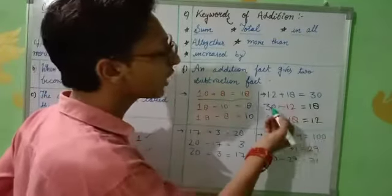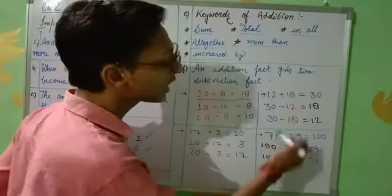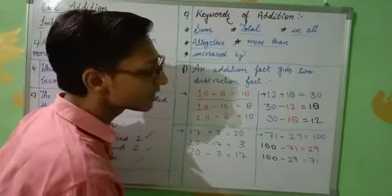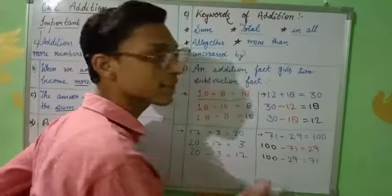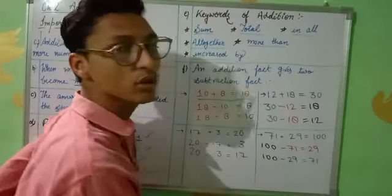12 plus 18 equals 30. 30 minus 12 equals 18, and 30 minus 18 equals 12. 71 plus 29 equals 100. 100 minus 71 equals 29, and 100 minus 29 equals 71.